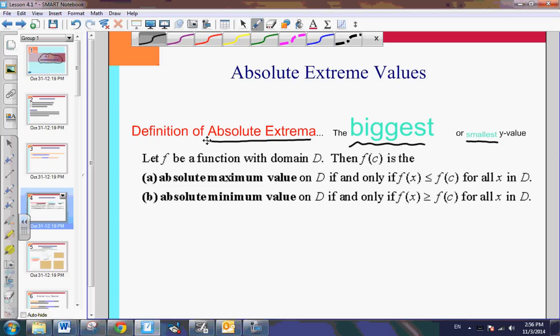When you have f be a function with a domain d, then f of c, so that is a y, an output within this function, will be an absolute maximum value if and only if f of c is greater or equal to f of x for all x. So that would be your greatest output.